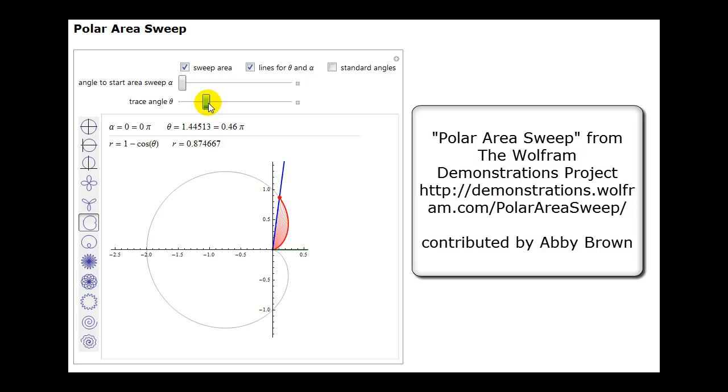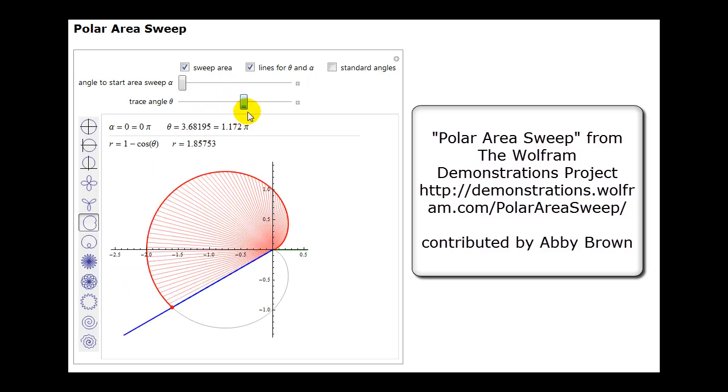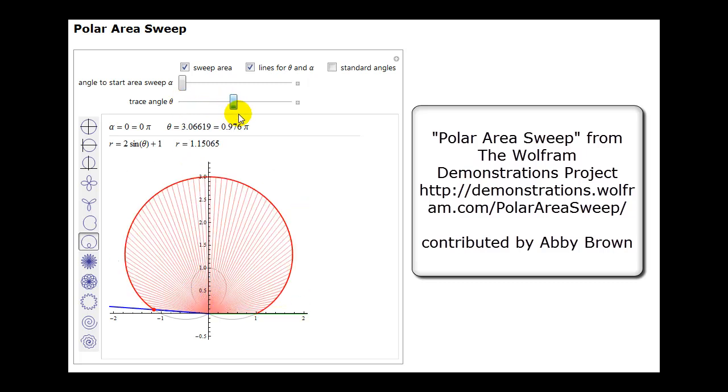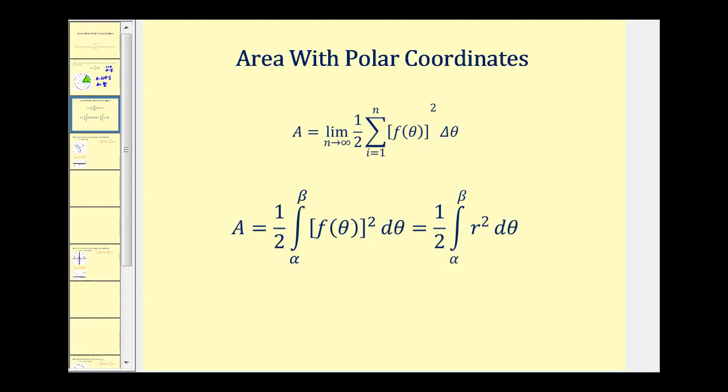Now we have the complete area bounded by that polar curve. Here's another just to develop the idea. Let's take a look at one more. Notice this one has an inner loop. Okay, let's go back to our presentation. So this is pretty much the same idea that we developed to find the area under a curve using rectangles, but now we're using circular sectors.